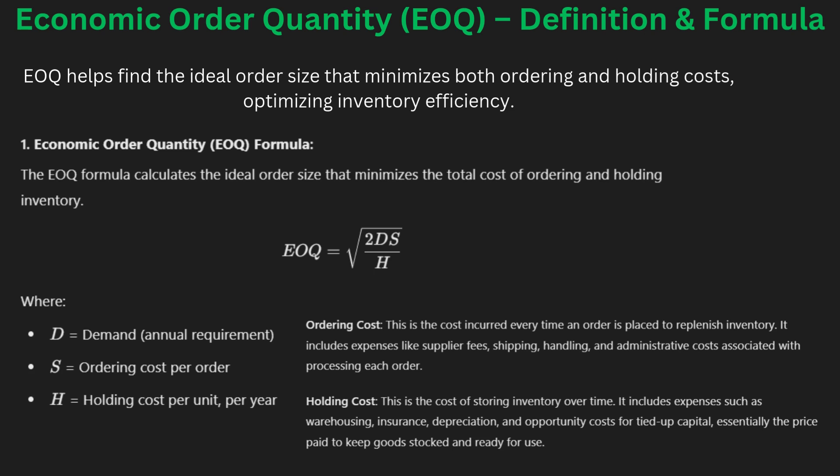Modern methods such as Just-In-Time (JIT) and Economic Production Quantity (EPQ) improve the efficiency of inventory management by ensuring that the business only stocks what it needs. These approaches reduce waste and excess inventory, complementing the ABC analysis framework.